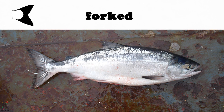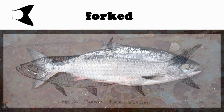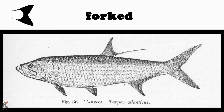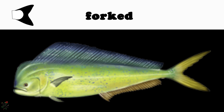This specific chum has a lightly forked tail fin, and this tarpon has a moderately forked tail fin. And we could consider this mahi-mahi, or dolphin fish, to have a deeply forked tail fin.